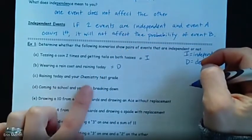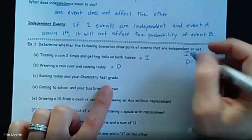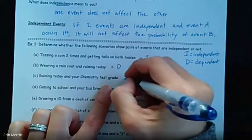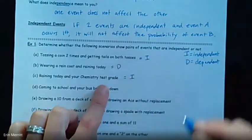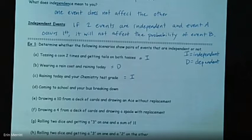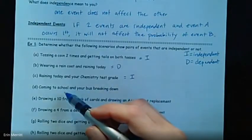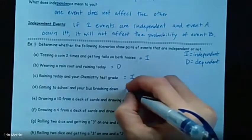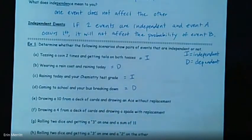Raining today and your chemistry test grade — probably not. Those are probably independent. You could blame it on the rain if you want to try. Coming to school and your bus breaking down — right now we're all at home, but typically if your bus breaks down, that might stop you from being able to come to school. So I would say typically those are dependent.